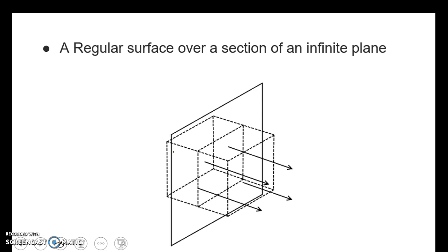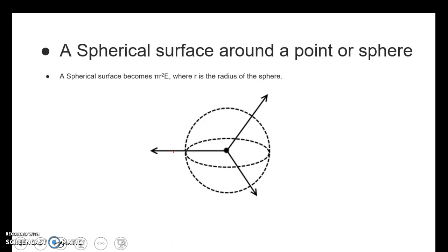The left-hand side of Gauss's Law becomes E times the surface area of the shape you choose. So for a spherical surface around a point or sphere, the surface becomes 4πr²E, where r is the radius of the sphere.